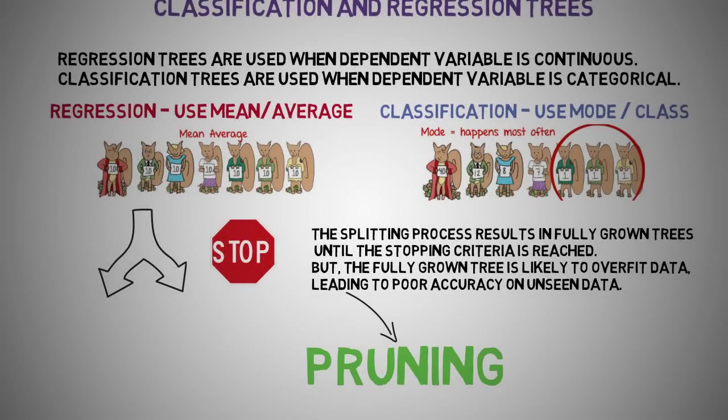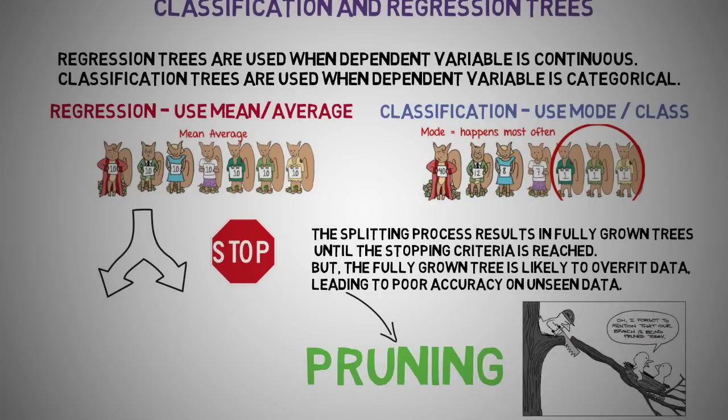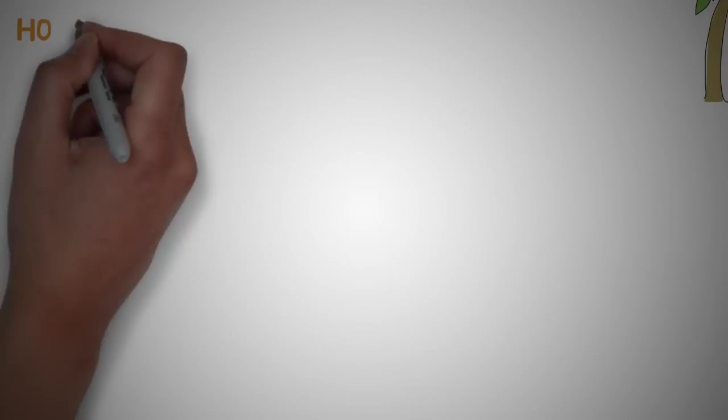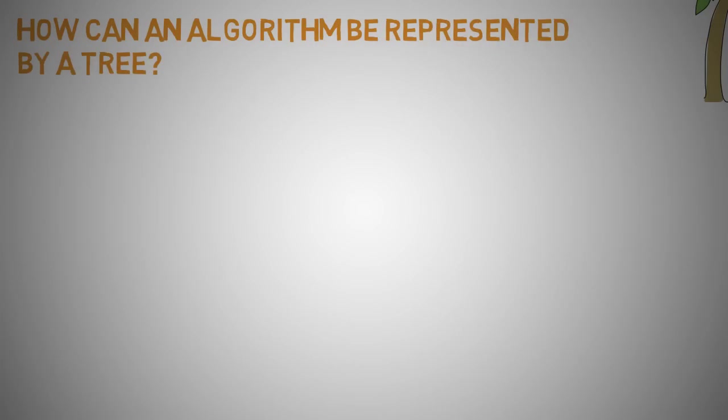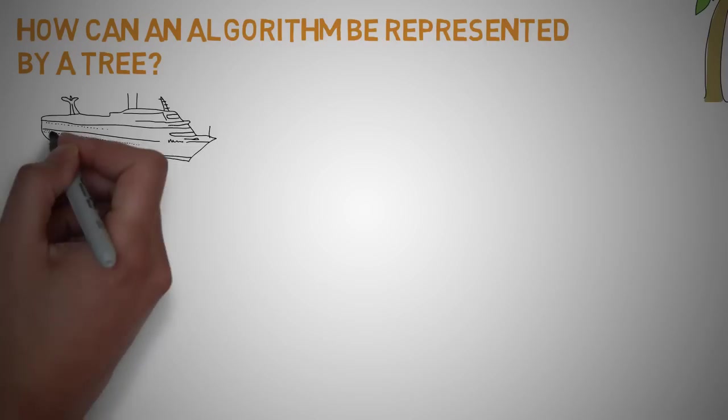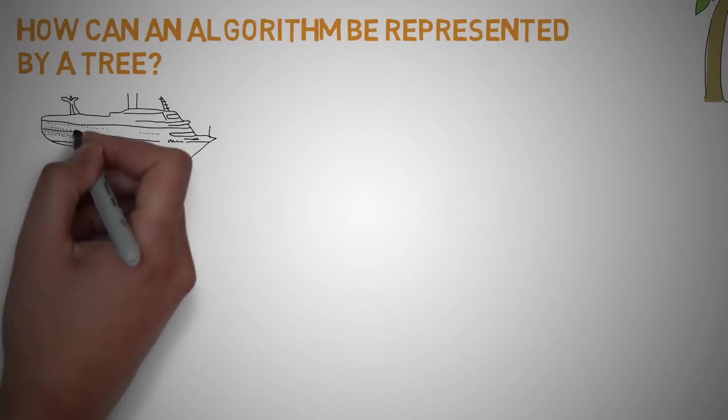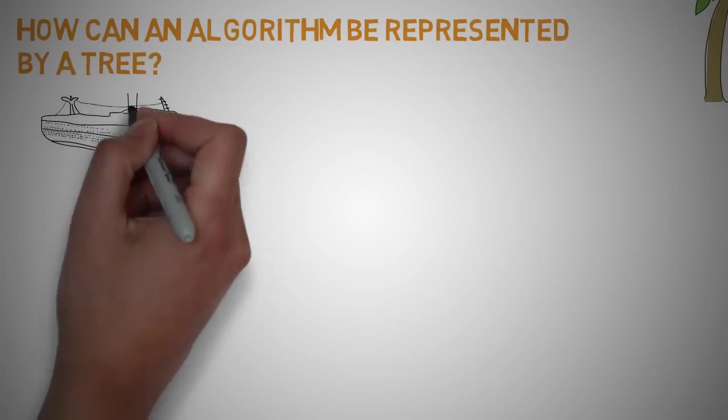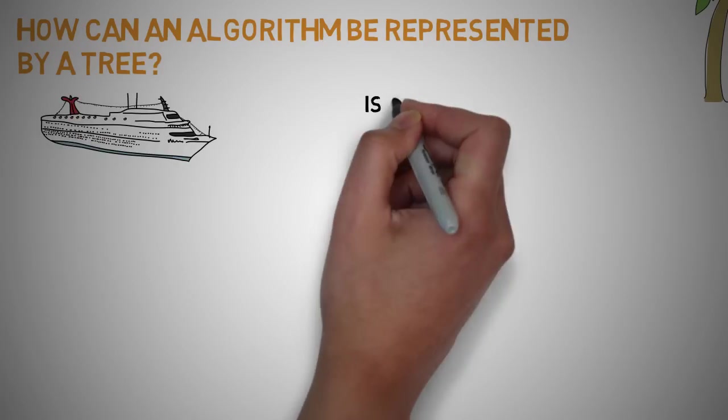How can an algorithm be represented as a tree? For this, let's consider a basic example that uses the Titanic dataset for predicting whether a passenger will survive or not.